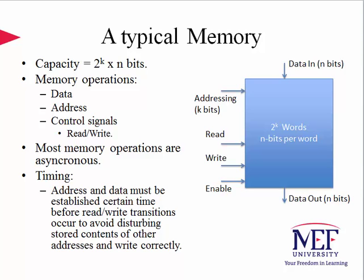Other operations are a combination of reads followed by a write, and a variety of other operations associated with delivering blocks of data to the user or to the CPU. Most memory operations are asynchronous, but there are beneficial designs with synchronous operations as well. Address and data must be established a certain time before read-write transitions occur to avoid disturbing stored contents of other addresses in the memory and also to be able to write data accurately. Accuracy is a pretty important topic for such a fast operating integrated circuit family.